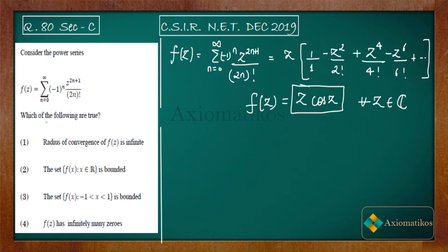Therefore, the radius of convergence of f(z) is infinite, because you can take any z ∈ ℂ — there is no finite radius after which this series diverges. It converges for every z. We don't need to use the Cauchy root test or any other test; we can directly see this power series converges to z·cos(z) for all z.